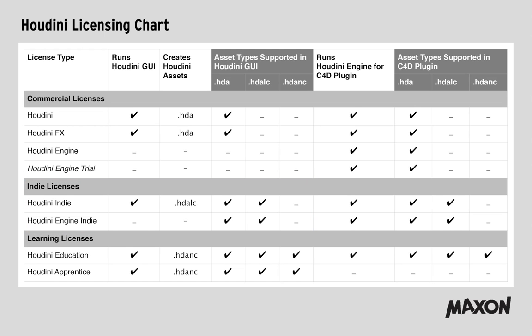The non-commercial license — Houdini Apprentice or the educational version — can create assets with the file extension HDANC, which stands for Houdini digital asset non-commercial.